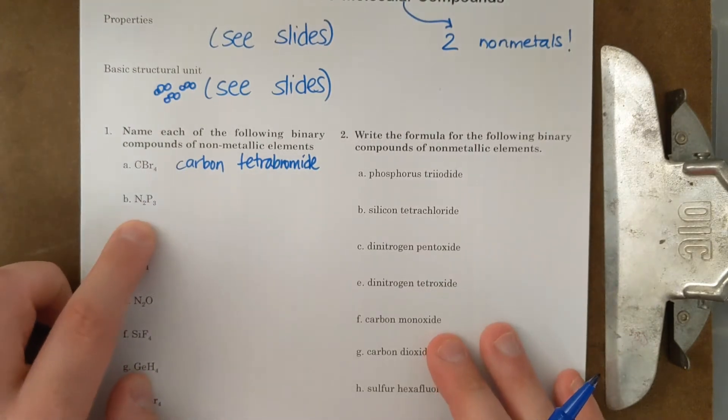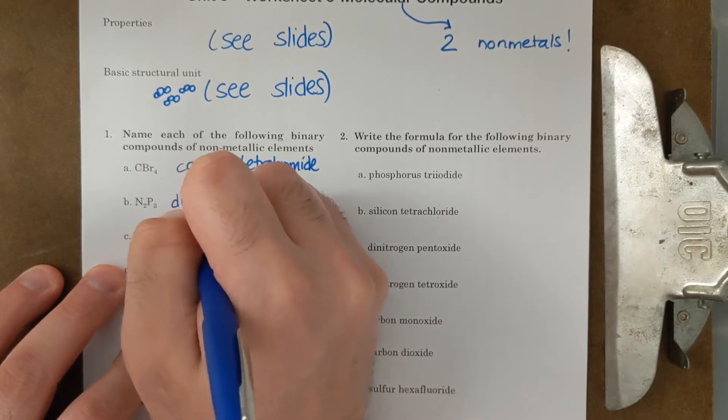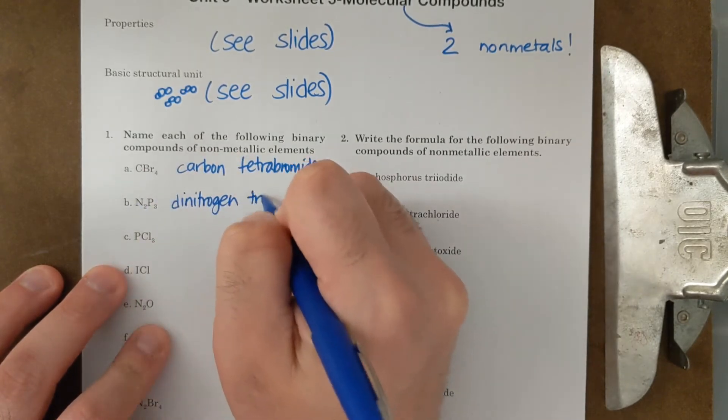Next one, I have N2P3. This is going to be dinitrogen triphosphide.